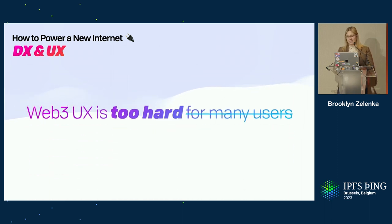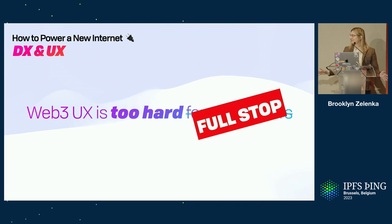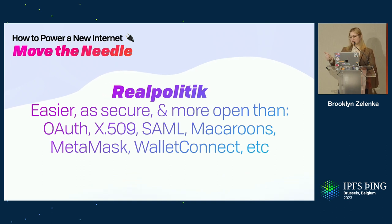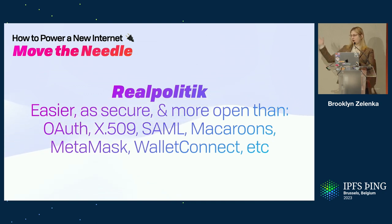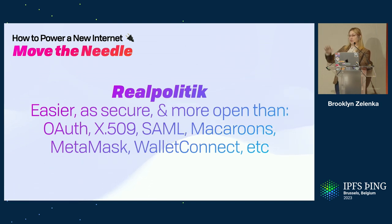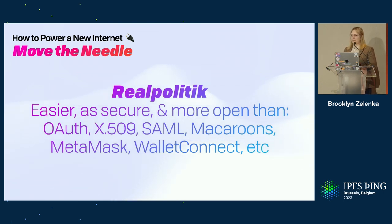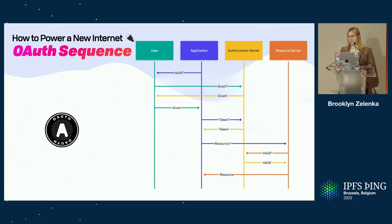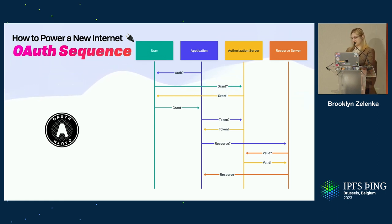It's relatively uncontroversial to say that Web3 UX is too hard in general. To meet the goal, we need to be easier, as secure, and more open than OAuth, X509, SAML, Macaroons, MetaMask, WalletConnect, and so on. I won't claim we've surpassed all of these in every dimension, but we're making pretty good headway. OAuth is the big one that everyone interacts with when you sign in with Twitter or GitHub — you're using OAuth. A user, the application asking for access, an authorization server that controls access, and the resource server.